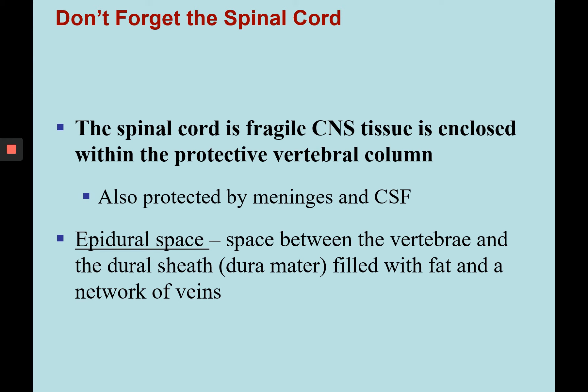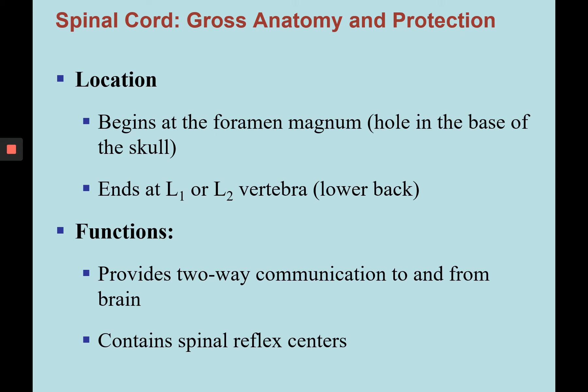Let's not forget the spinal cord. The brain is one structure of the central nervous system; the spinal cord is the other, and it's fragile. It's enclosed within the vertebral column for protection, but it's also protected by the meninges — dura, arachnoid, and pia mater — around the spinal cord, along with cerebrospinal fluid in its central canal and in the meninges. There's also an epidural space between the vertebra and the dura mater filled with fat and networks of veins. The spinal cord is located between the foramen magnum and the first or second lumbar vertebrae, and functions as a two-way communication system to and from the brain, with some spinal reflex centers.